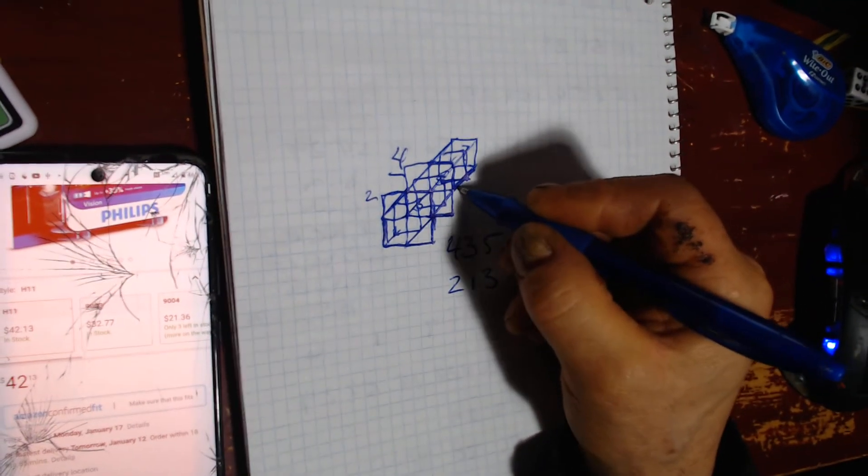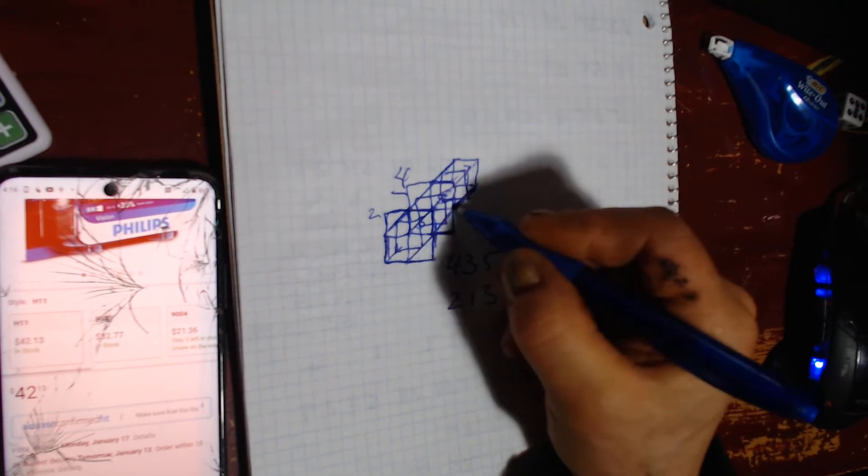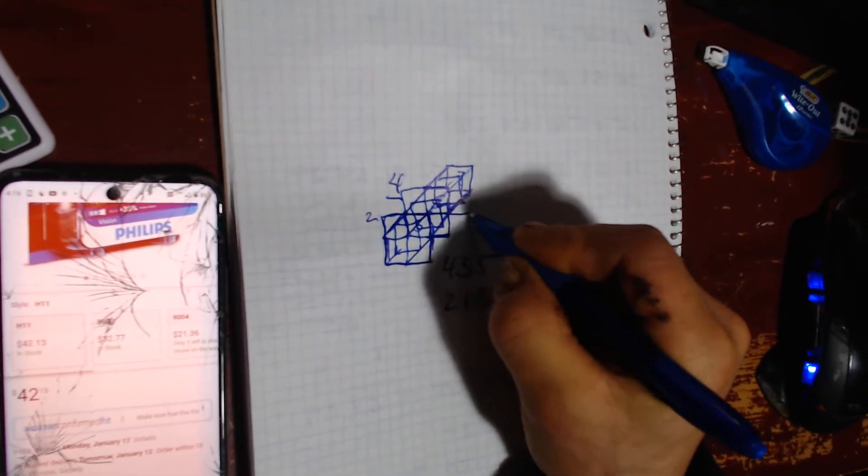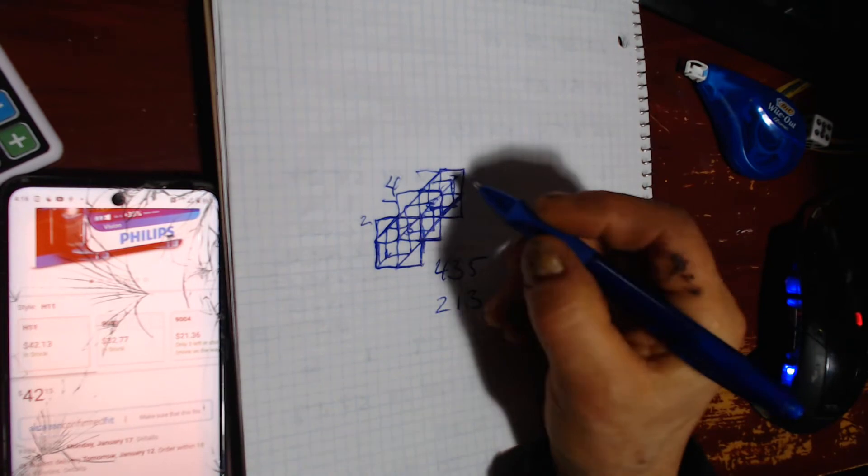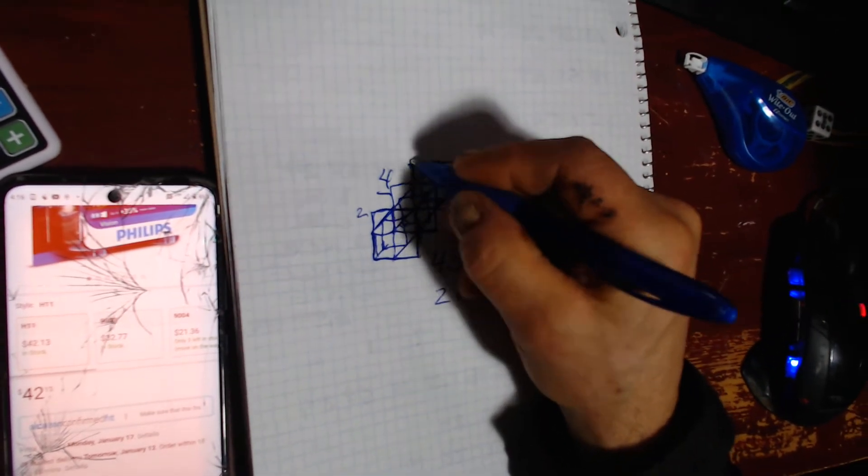And then the third box will start over here. If I get that right, it'll come around and then come down to over here.